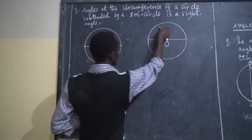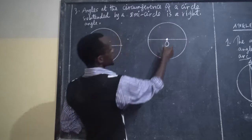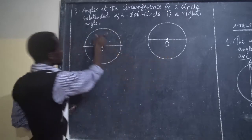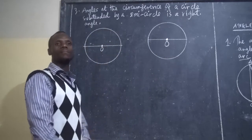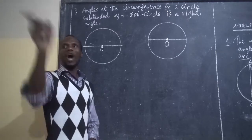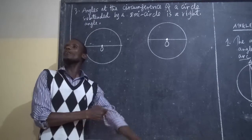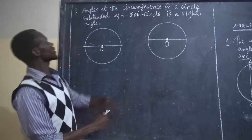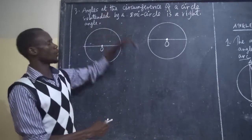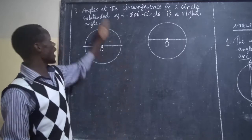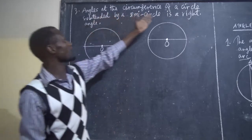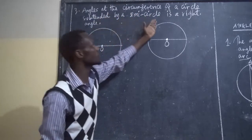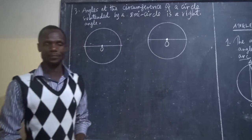This is the first semi-circle and this is the second semi-circle. Now, what we are looking for — we want to understand this definition: angles at the circumference of a circle obtained by a semi-circle form a right angle.